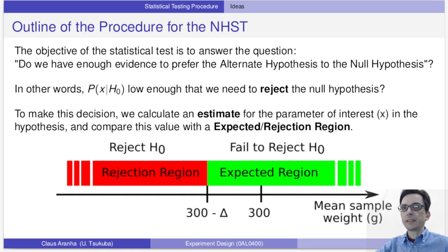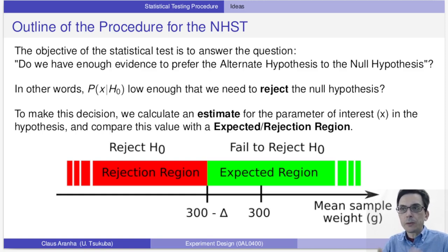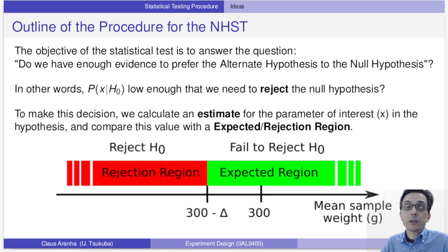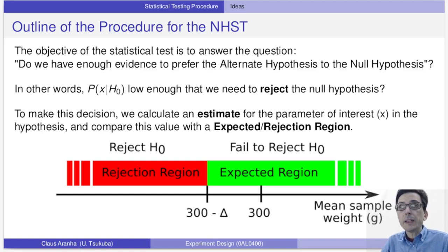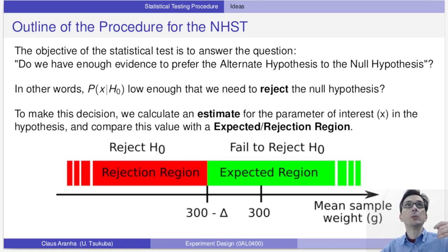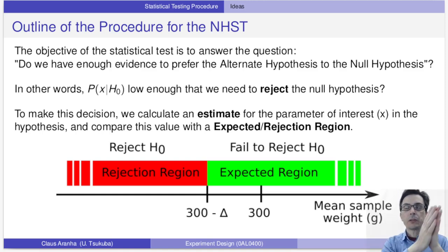In the last video we talked about the procedure for null hypothesis testing. The idea is that we select a null hypothesis and an alternate hypothesis, and from the experimental data we try to decide which one is more probable. To be more precise, we want to answer: do we have enough evidence to prefer the alternate hypothesis to the null hypothesis? To answer this, we calculate a statistic X and see if the probability of that value is low enough under the null hypothesis that we must reject it.